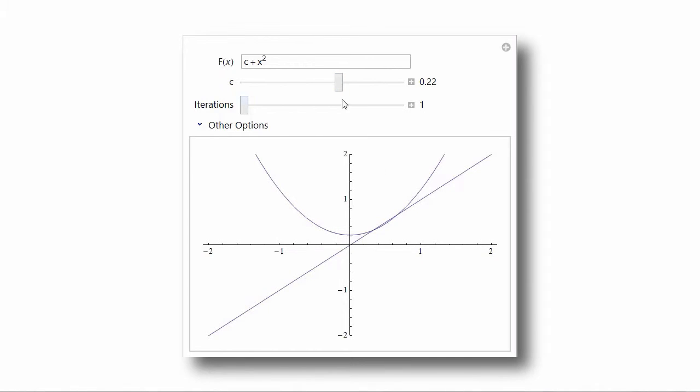One's still attracting, one's still repelling, until c passes about a quarter, it looks like, 0.25. And then the fixed points vanish altogether. So we've just seen a bifurcation. We've seen a change in the nature or number of the fixed points.